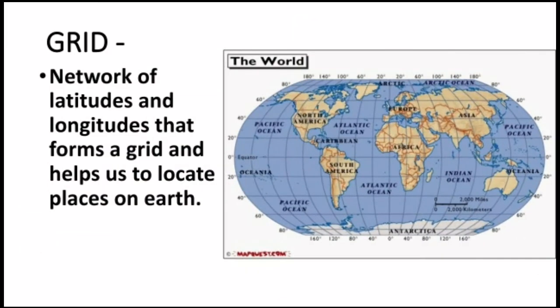Now we can locate a place. If we know the latitude and longitude of a place, like a ship captain or an aeroplane pilot needs to know, we can mark the horizontal and vertical lines. When we combine horizontal and vertical lines, we create a grid over the whole globe. This grid helps us locate any place on Earth.